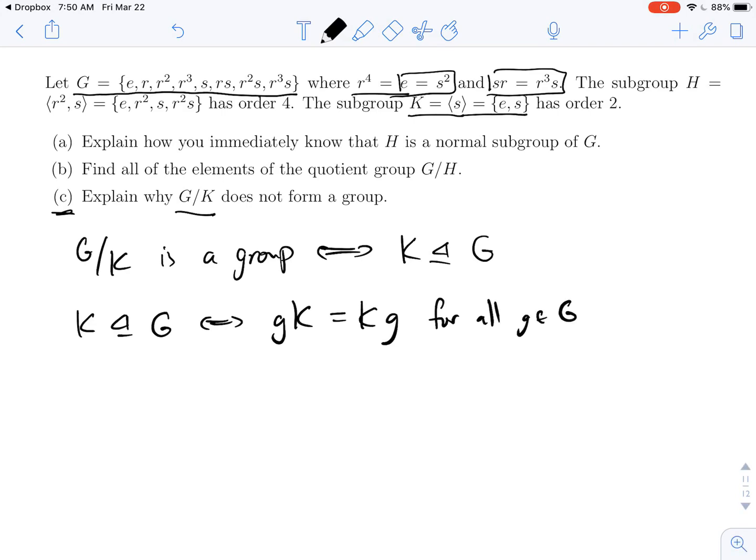So let me take some element of G, and I'm going to take something that's not in K to begin with, so we'll say R. I'm going to look at the left coset of K with representative R. So this will be R times E and R times S, which is just equal to R, RS.